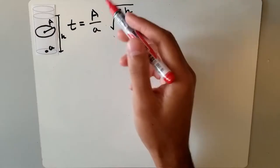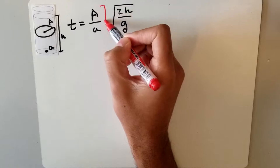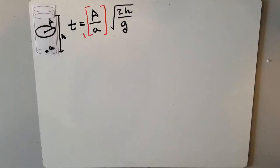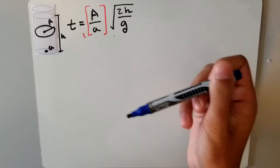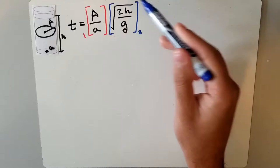There are two main parts of this equation. The first part being the area of the container over the area of the hole, and the second part being the square root of 2h over g. Let's first focus on the second part and how we get to there.